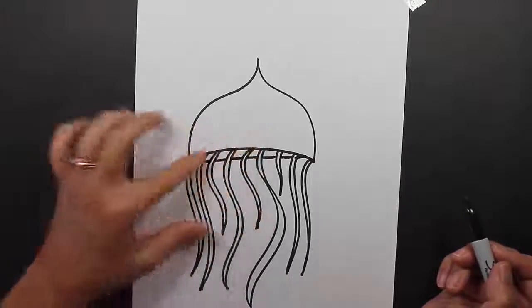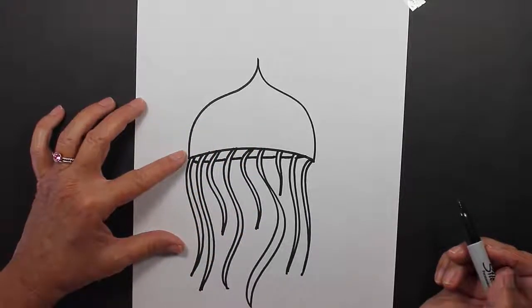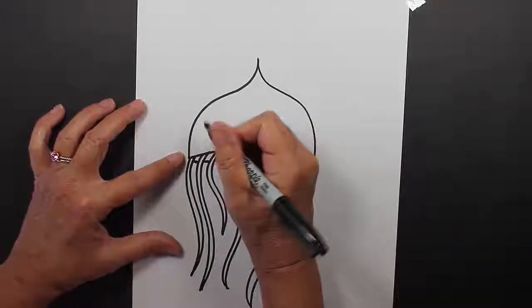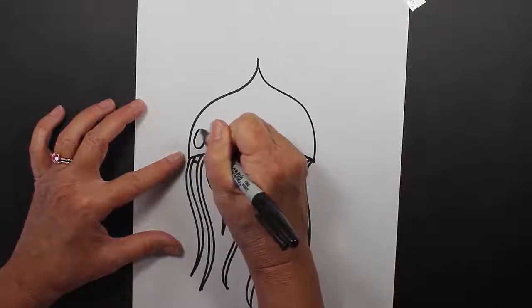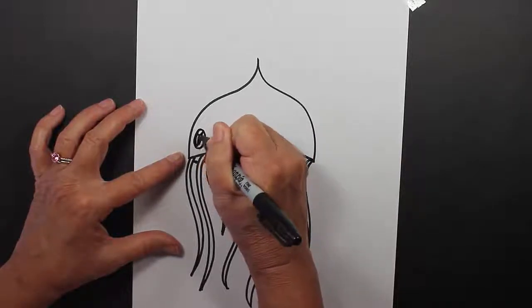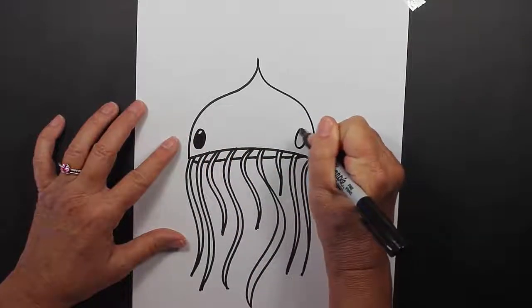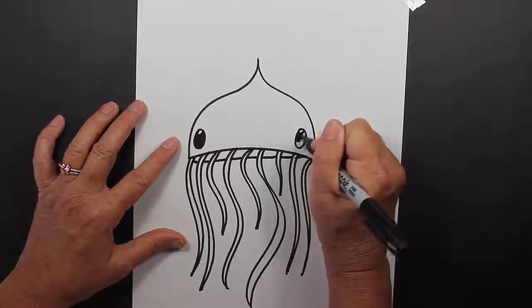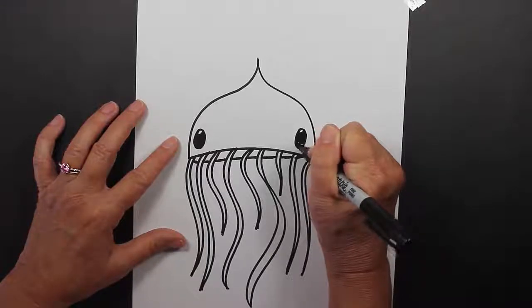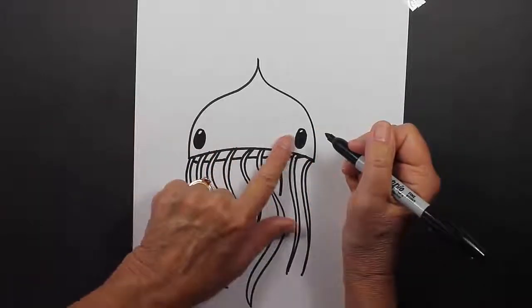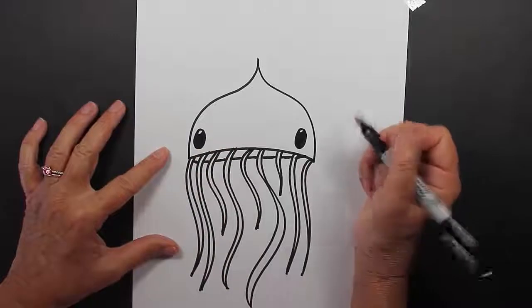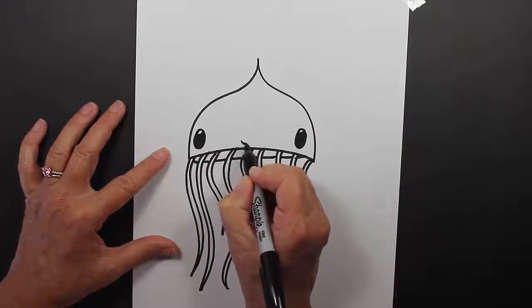Now we're going to go back up to the jellyfish's face and make some eyes. This is a cartoon jellyfish, so I like to make a little shine mark there at the top. These eyes are pretty wide set, which means they are not really close together on the shape, and I'd also like to make a small smile.